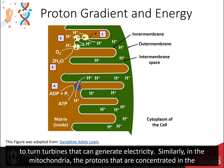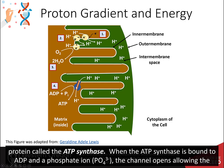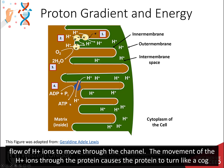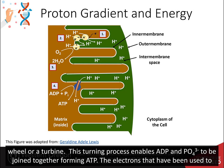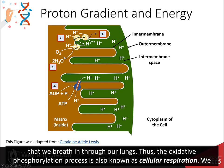Similarly, in the mitochondria, the protons concentrated in the intermembrane space hold potential energy. This energy is used to produce ATP through a protein channel called ATP synthase. When ATP synthase is bound to ADP and a phosphate ion, the channel opens, allowing protons to flow through. The movement of protons causes the protein to turn like a cog wheel or turbine, enabling ADP and inorganic phosphate to join together to form ATP. The electrons that generated the proton gradient ultimately reduce a molecule of oxygen into water — the oxygen we breathe in through our lungs. Thus, oxidative phosphorylation is also known as cellular respiration.